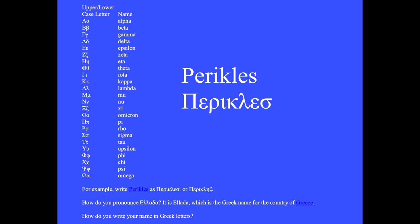How would you spell Pericles? The P is written with a pi. E is an epsilon. R is a rho. I is iota. K is kappa. L is lambda. E is epsilon. And S is sigma.